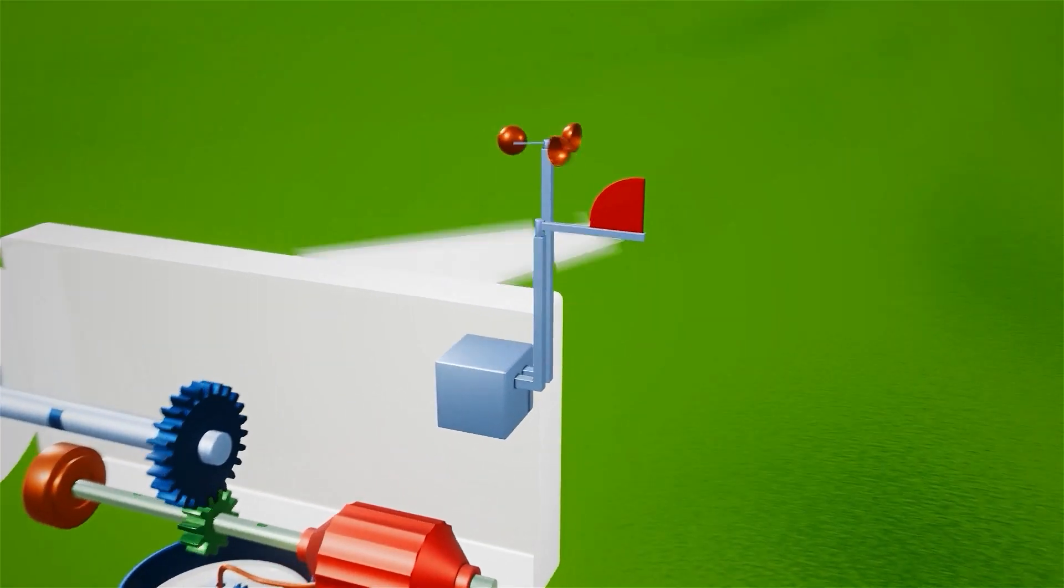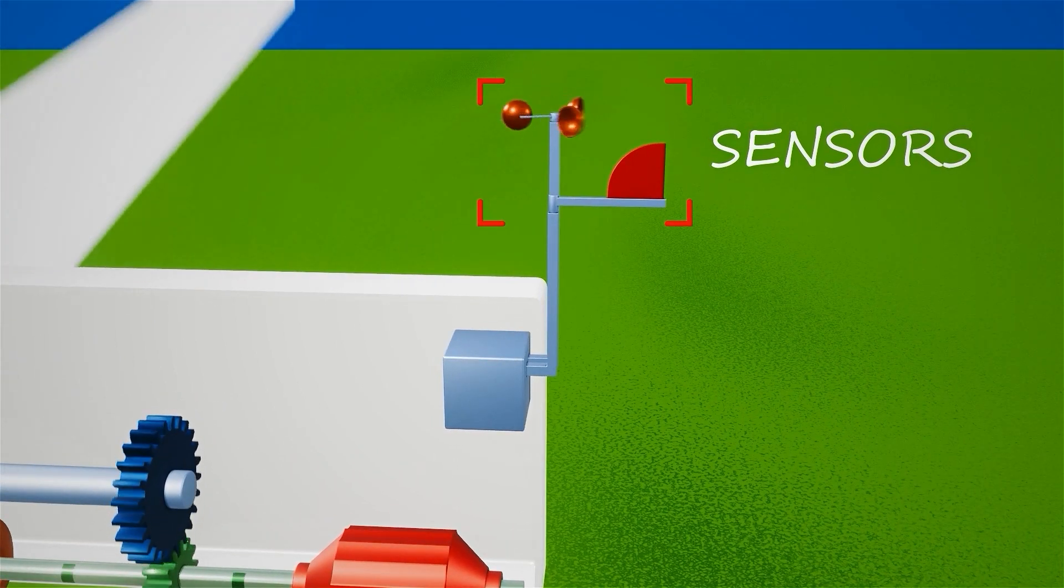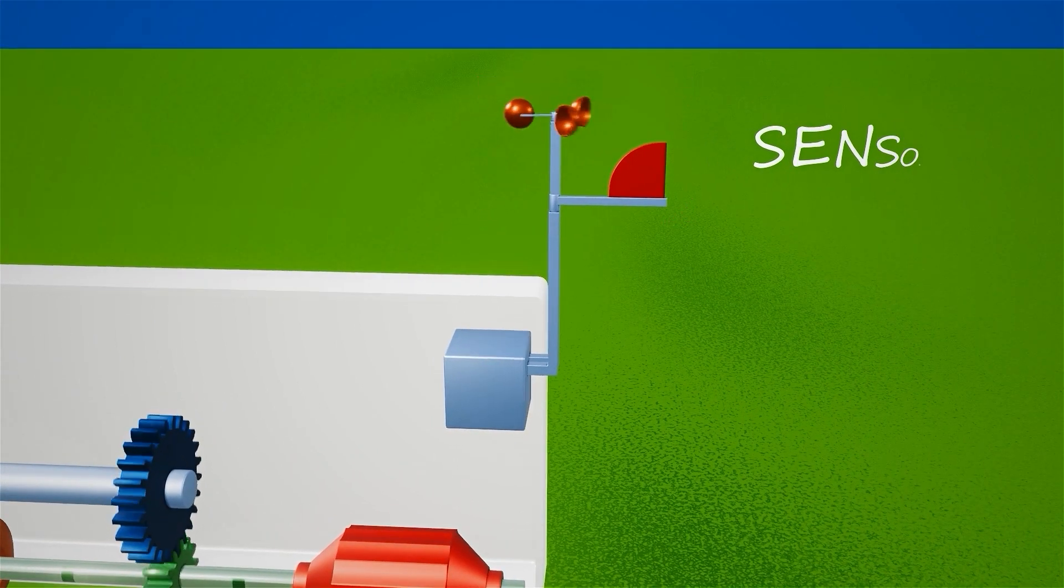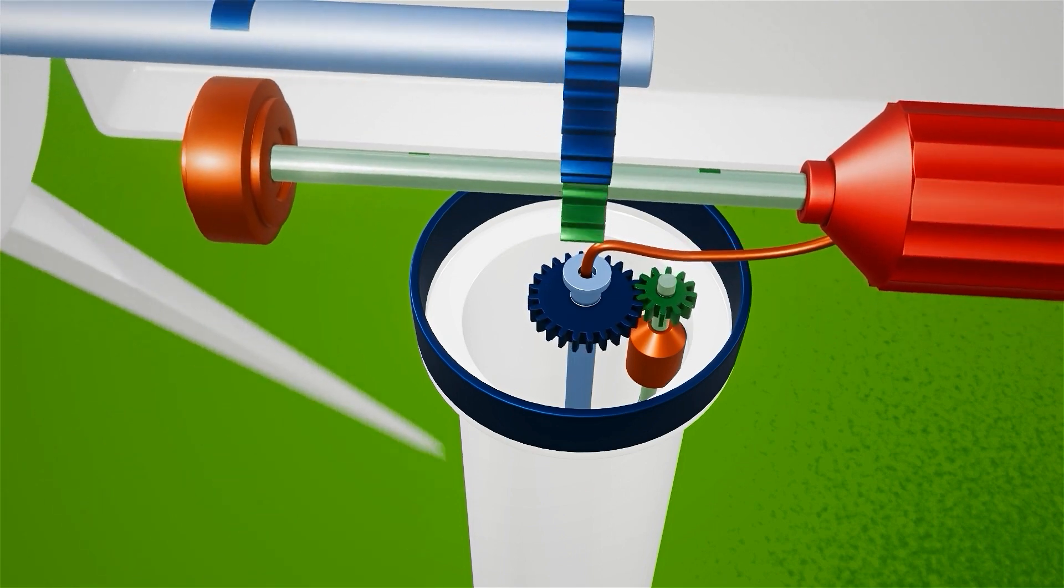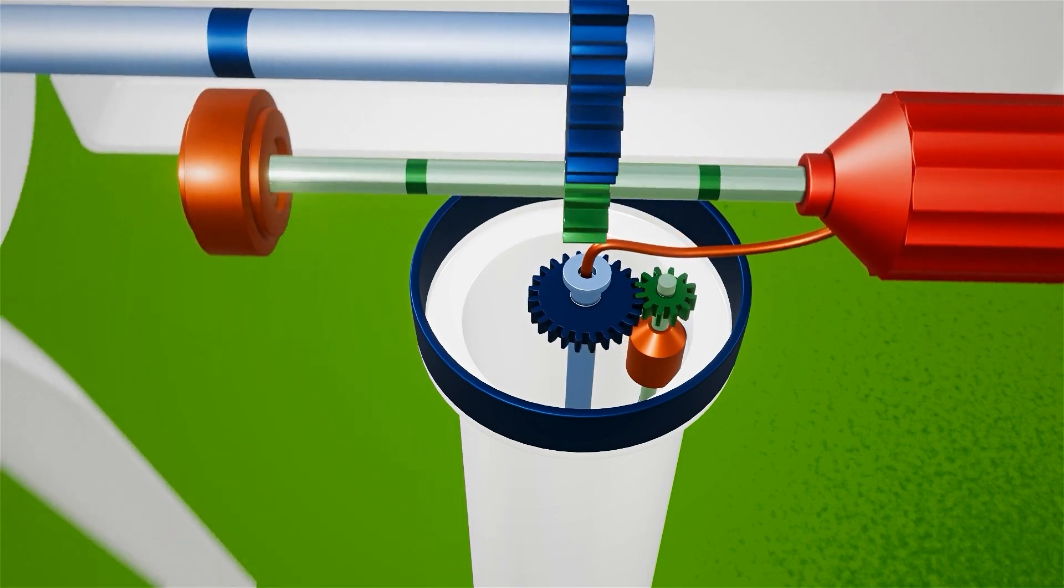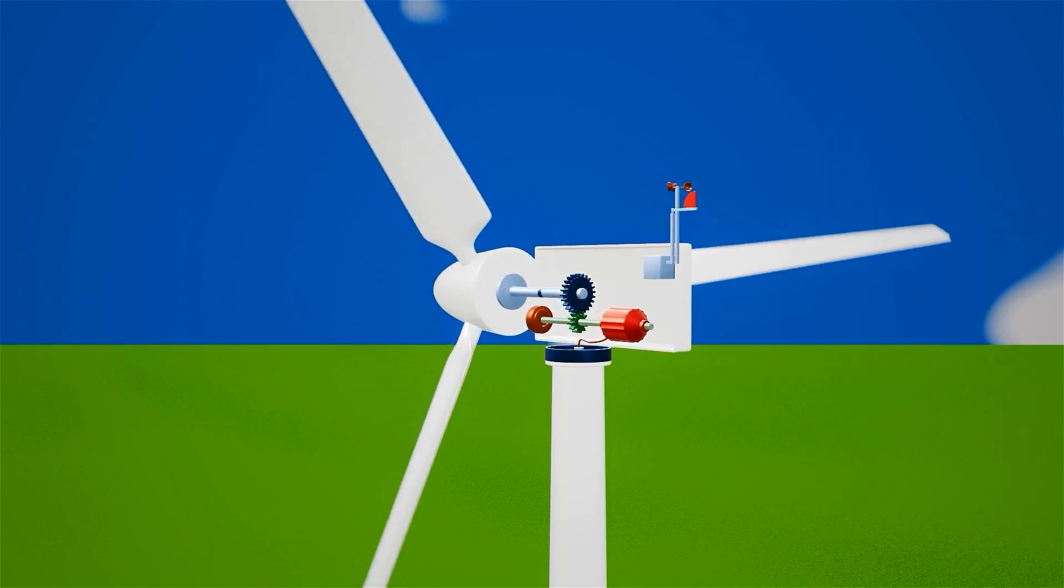Wind turbines are equipped with sensors that continuously monitor wind direction and speed. These sensors send data to the controller, which uses it to adjust the turbine's orientation with the help of a motor. If the wind direction changes, the controller reorients the turbine.